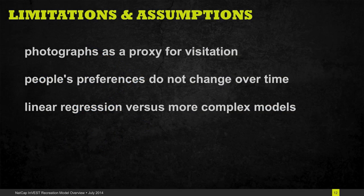Some of the limitations and assumptions of this model that might be important to keep in mind are that we're using photographs as a proxy measure of where people go. This is an estimate of the visitation rate in any given place. We also assume that people's preferences don't change over time, so in other words we calculate the effect of each of those predictors on visitation and we use that effect size as our basis for determining how changes in those layers might result in changes in visitation in the future. The model uses a linear regression but there are of course other more complex models out there that you might think about using.